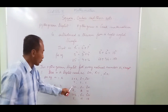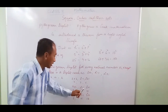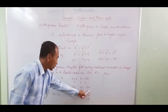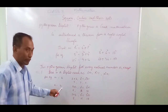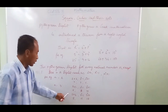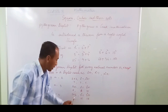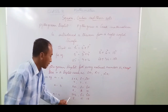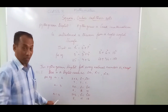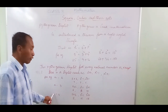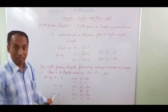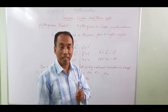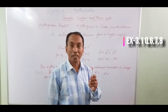For natural number 3: 2 into 3 is 6, 3 squared minus 1 is 8, 3 squared plus 1 is 10 — triplet is (6, 8, 10). For natural number 4: 2 into 4 is 8, 4 squared minus 1 is 15, 4 squared plus 1 is 17 — triplet is (8, 15, 17). As homework, find the triplets for natural numbers 5, 6, and 7, and complete Exercise 3.1 questions 6, 7, and 8.